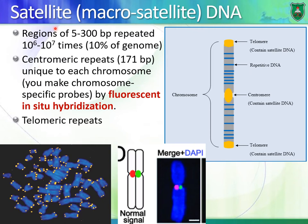Most of these satellite sequences are located in the centromeres. The centromere is located in the middle of chromosomes, and it separates the short arm of the chromosome — the P arm — from the Q arm, the long arm of the chromosome.